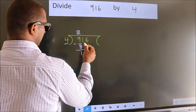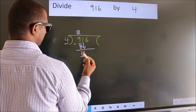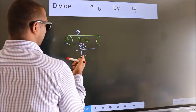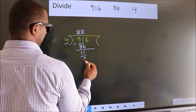After this, bring down the beside number. So 1 down. So 11. A number close to 11 in 4 table is 4 2s 8.